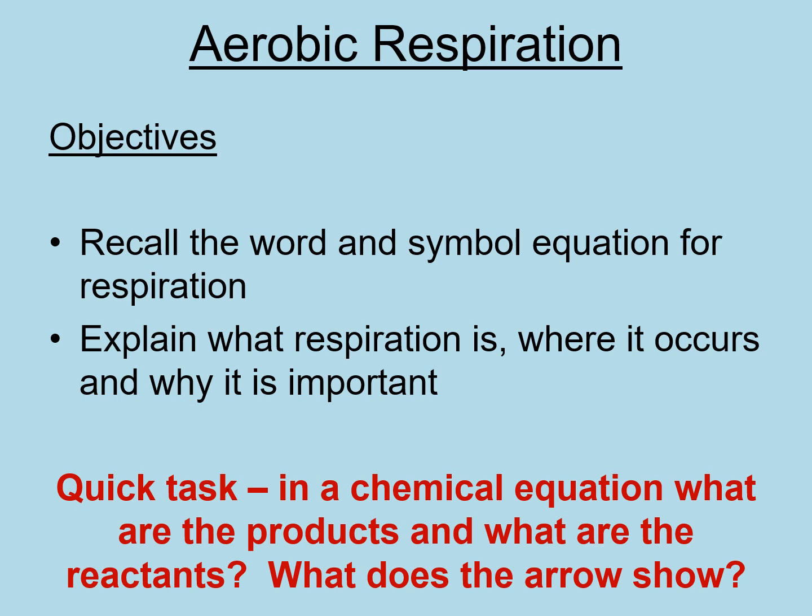What I want you to do is write down the title, the date, and the objectives, and then complete the quick task. You should be able to remember from your reactivity and reactions topic: in a chemical equation, what are the products and what are the reactants, and what does the arrow show? So pause the video here, write the title, date, and objectives, and complete the quick task.